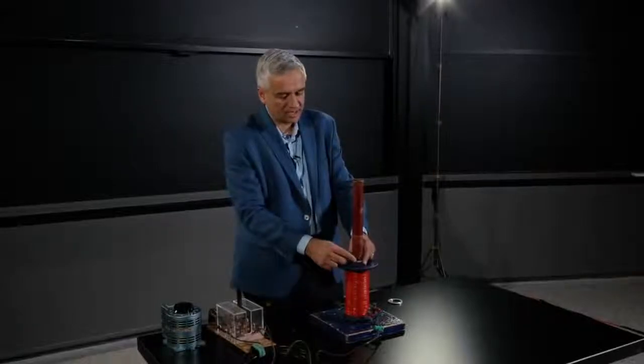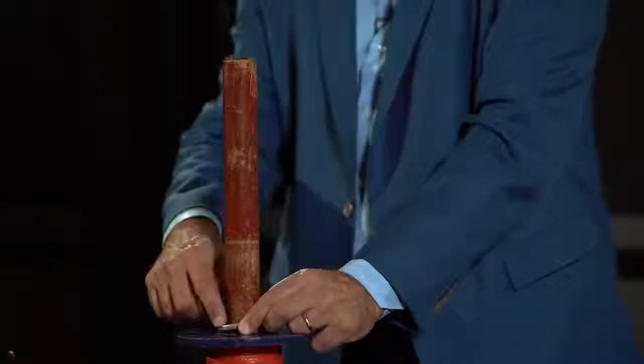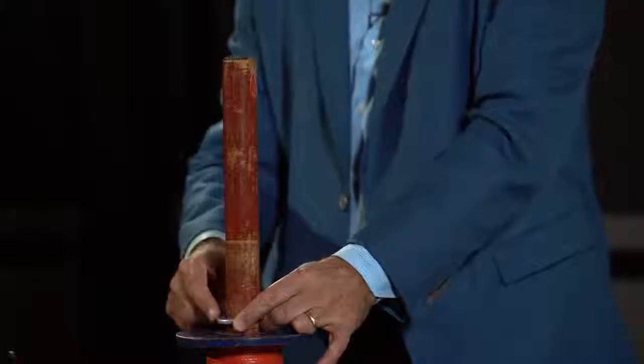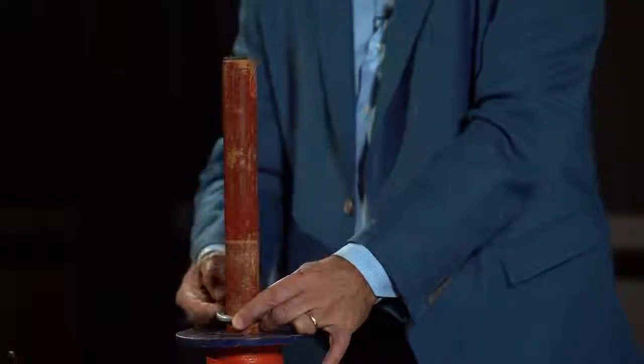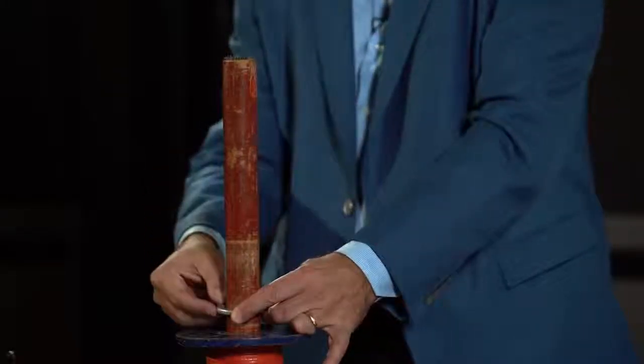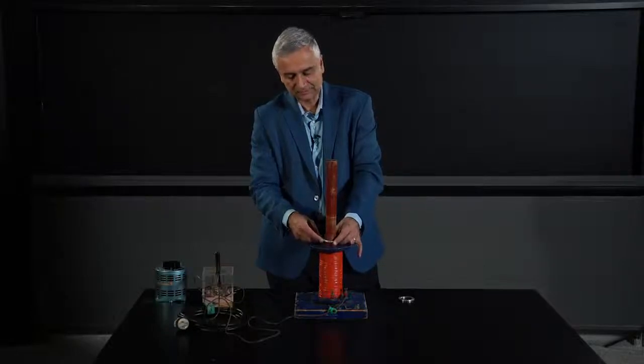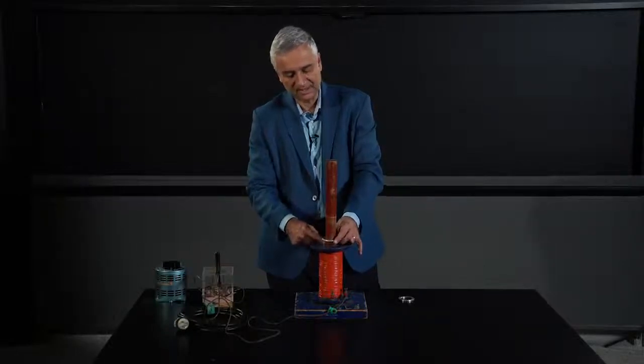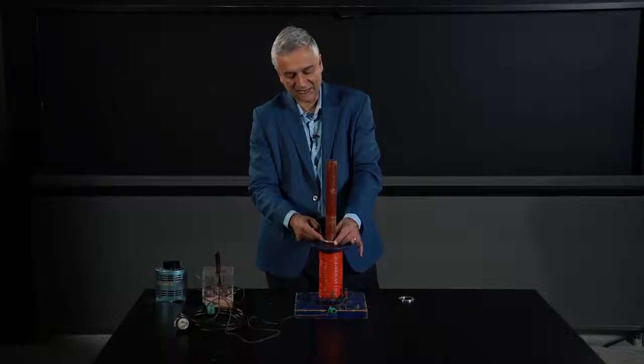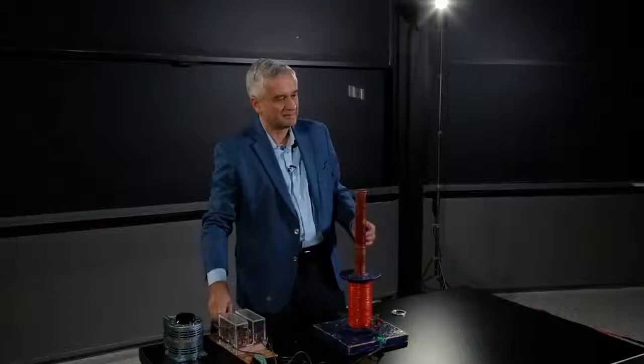And according to Lenz's law, the signs are such that the current that I send through this ring is going to try and resist the change in flux. It's going to try and reduce the magnetic flux through the ring itself, and that means it's going to set up a force that tries to reduce the magnetic field in here, which means that's what happens.